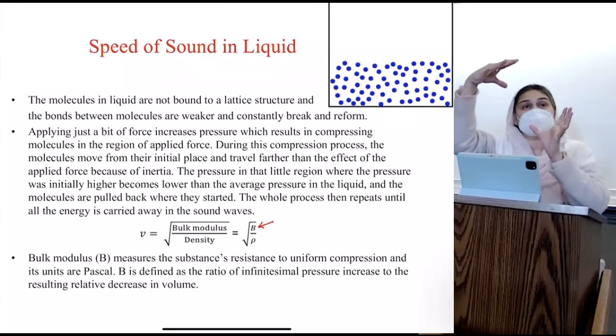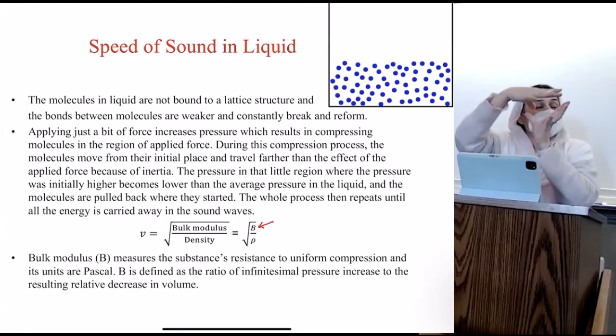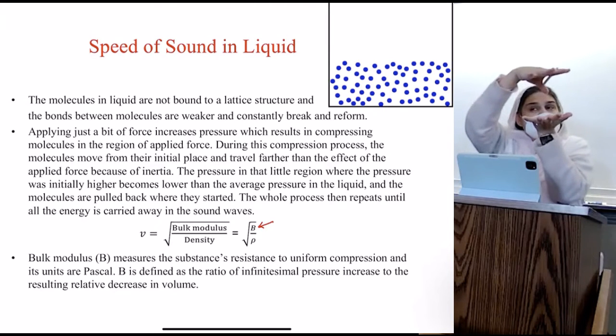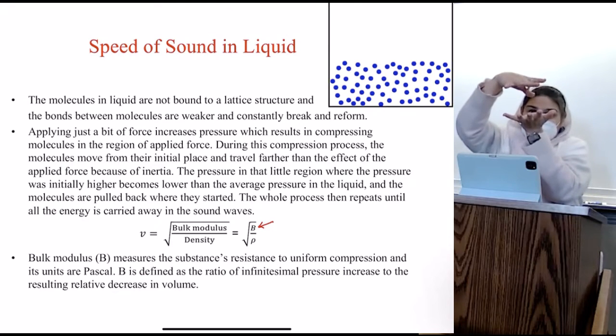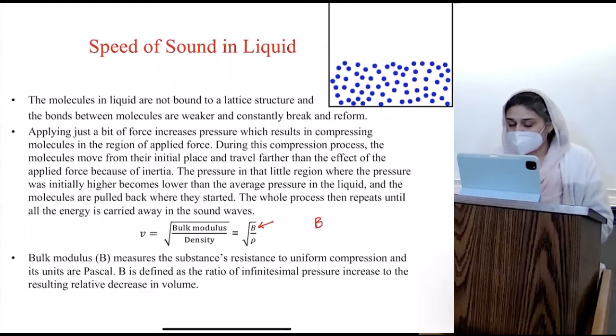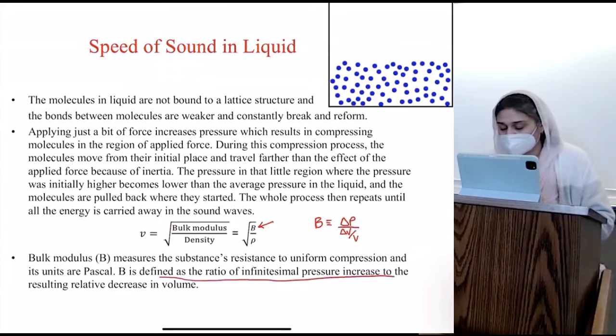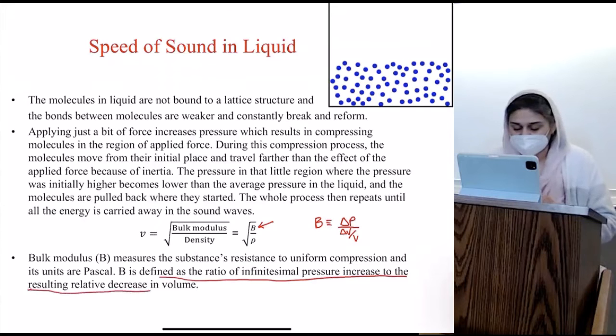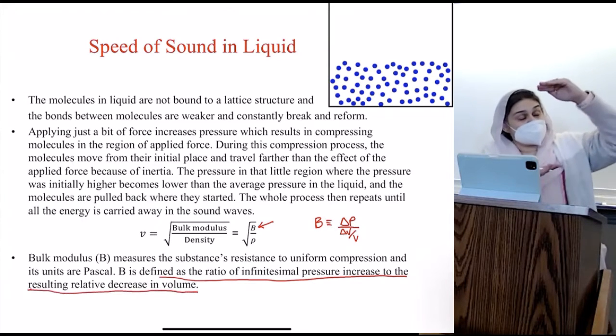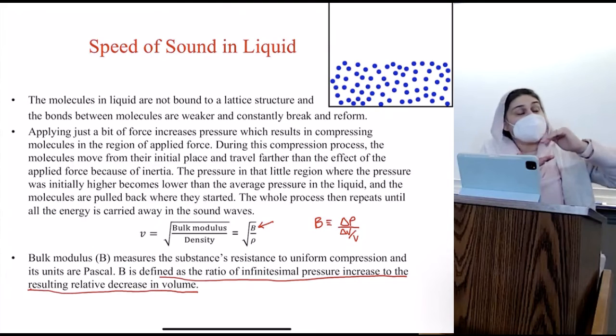In order to remember what this is, liquids and gases both can be compressed. So because of this compression, what happens when you compress something? Its volume becomes smaller as the pressure becomes larger. So B is defined as the ratio of delta P to the change in volume divided by V. Just remember this. As you increase pressure, you decrease the volume.